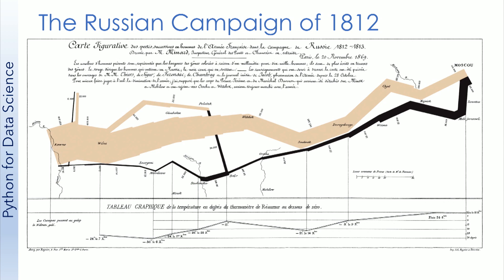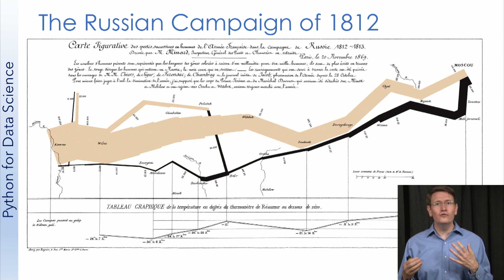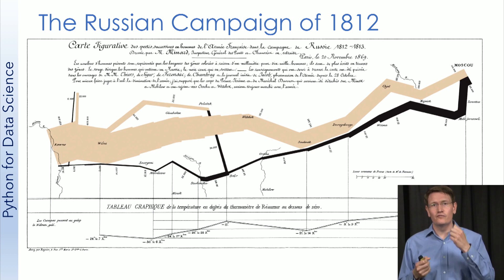So what makes this visualization so special? Most notably, it has six types of data all being visualized: the latitude and the longitude for the armies, the direction the army was traveling, the size of the army, the distance the army traveled, and the temperature the army faced during their retreat. By encoding all these types of data, one figure is capable of presenting the story of the French losses during the Russian campaign in 1812.